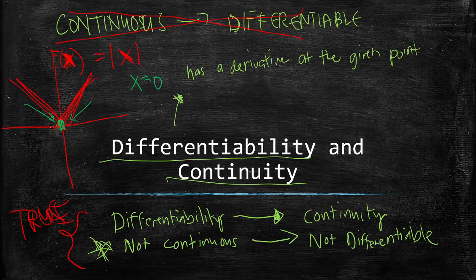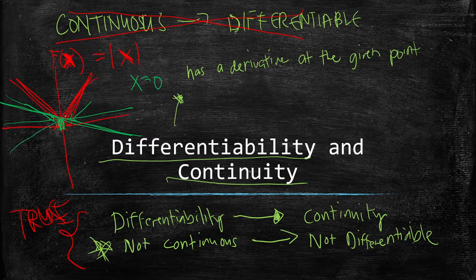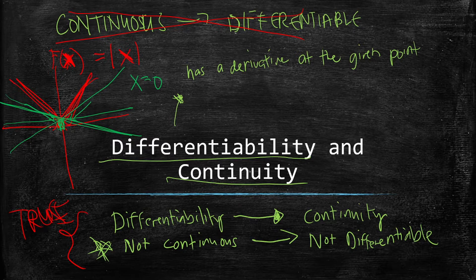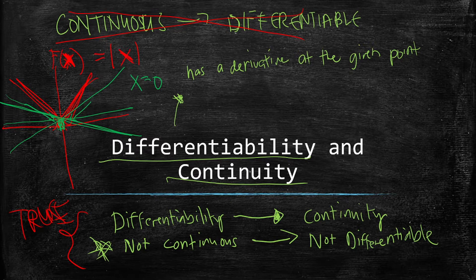So |x| is continuous, but if you try to draw a tangent line at x = 0, there are infinitely many tangent lines possible. One rule when looking at graphs: a function is differentiable if there is only one possible tangent line at that point. If there are infinitely many tangent lines, or none can be found, it is not differentiable.